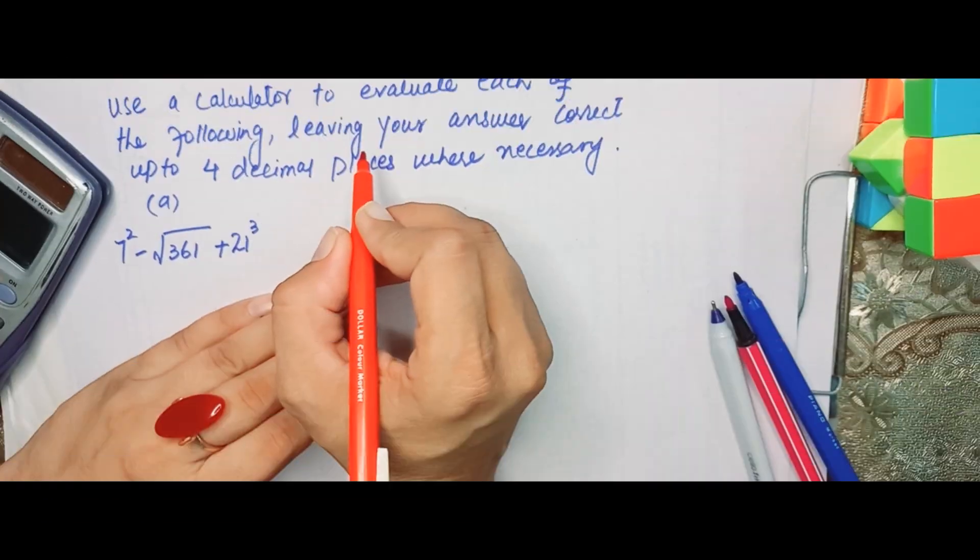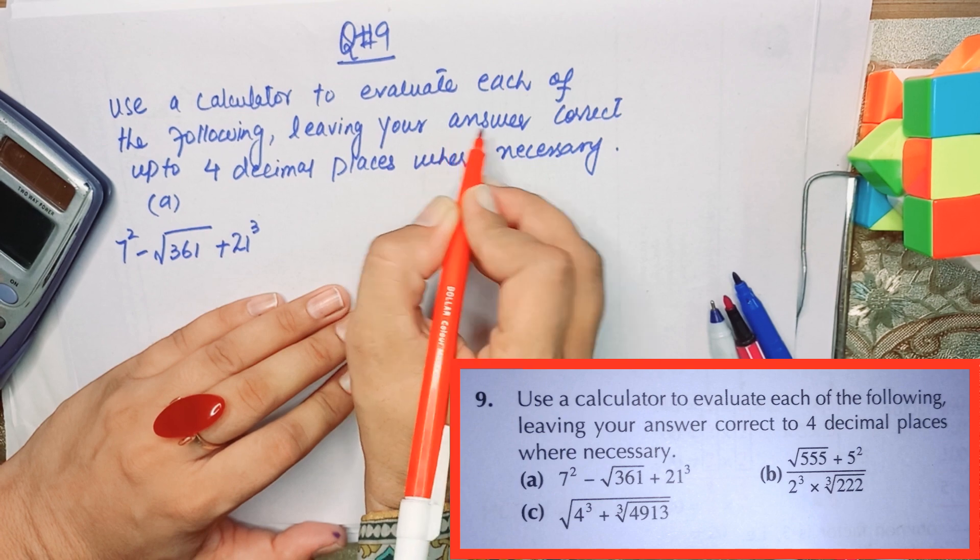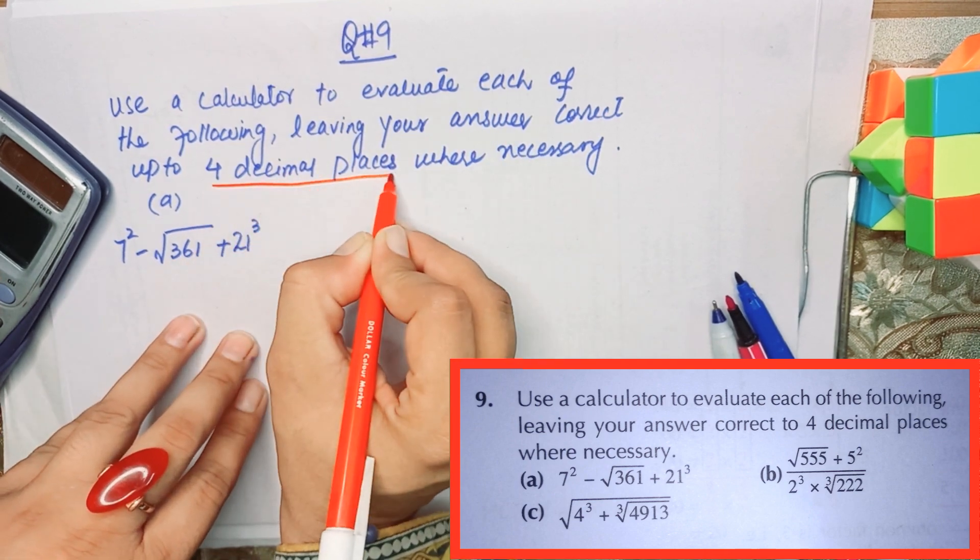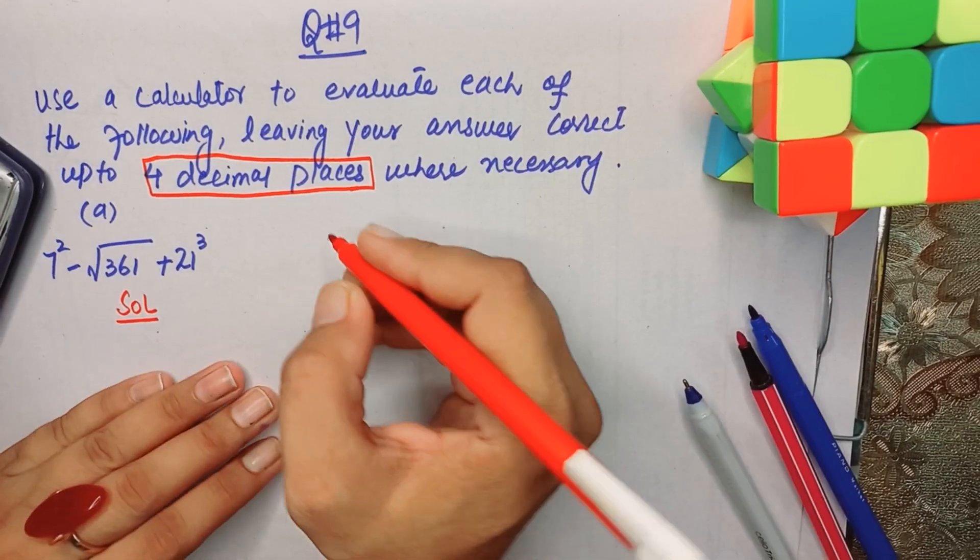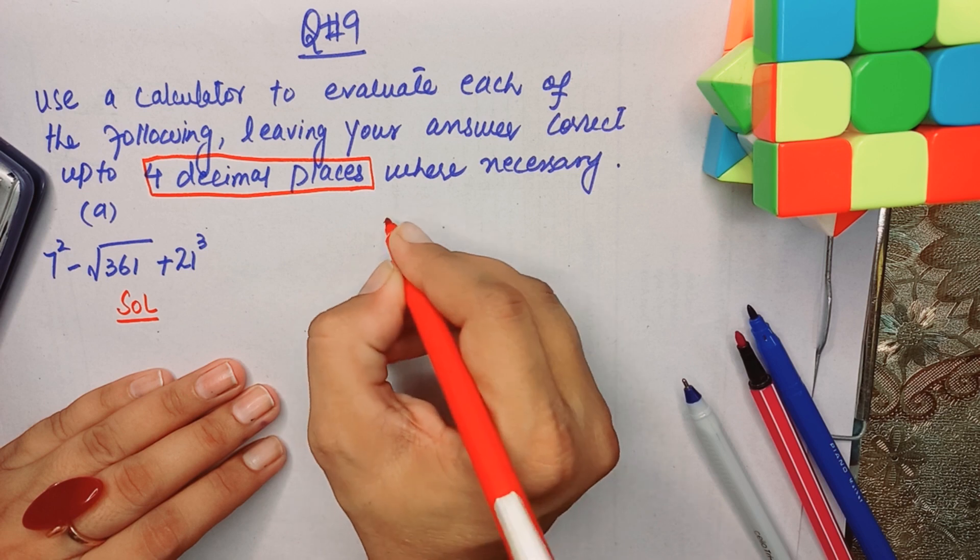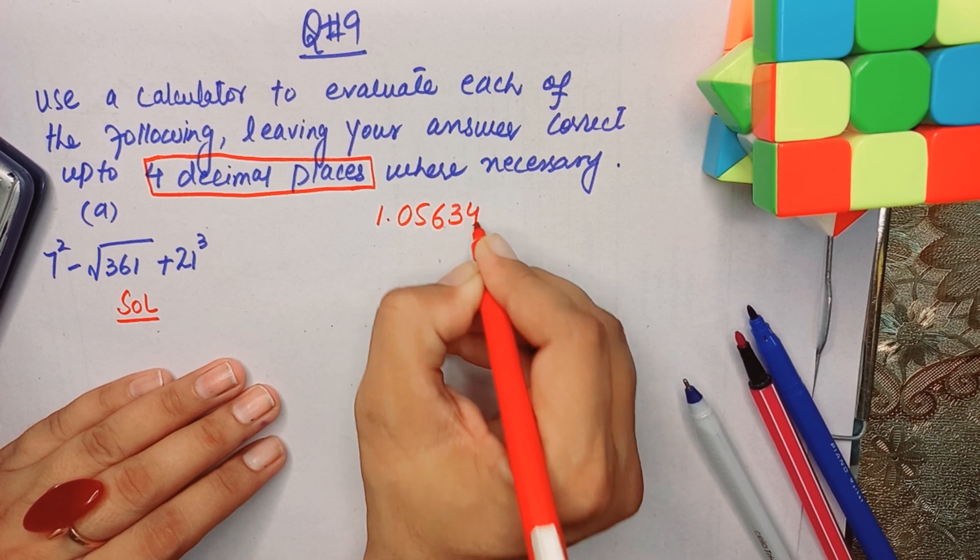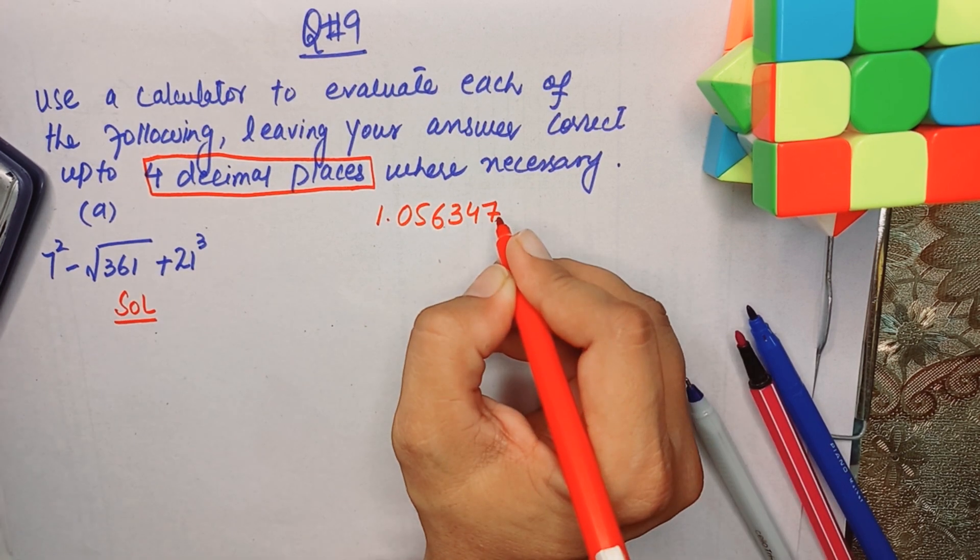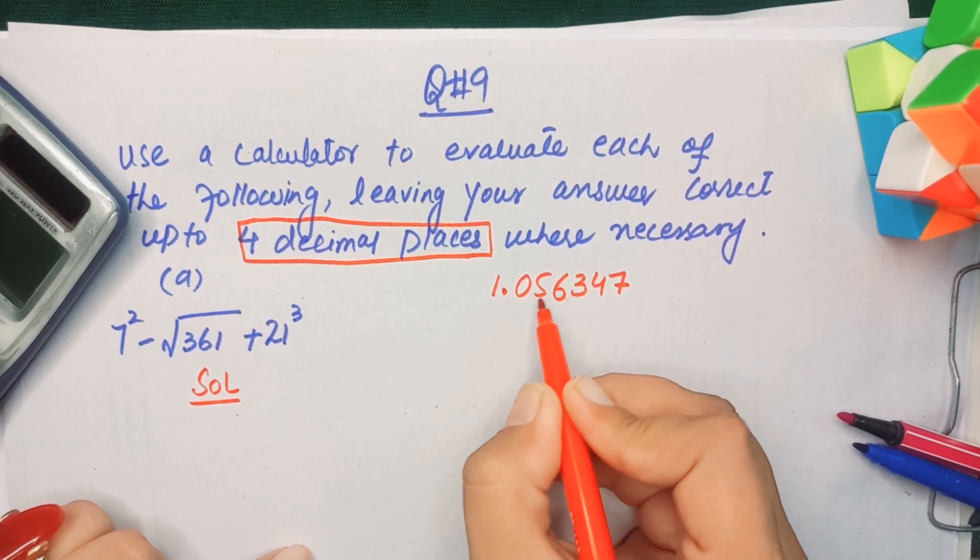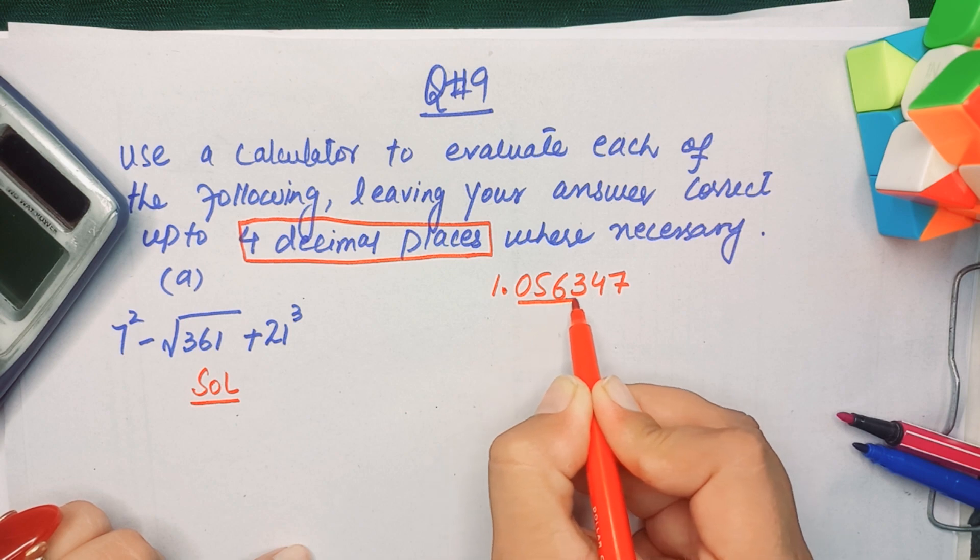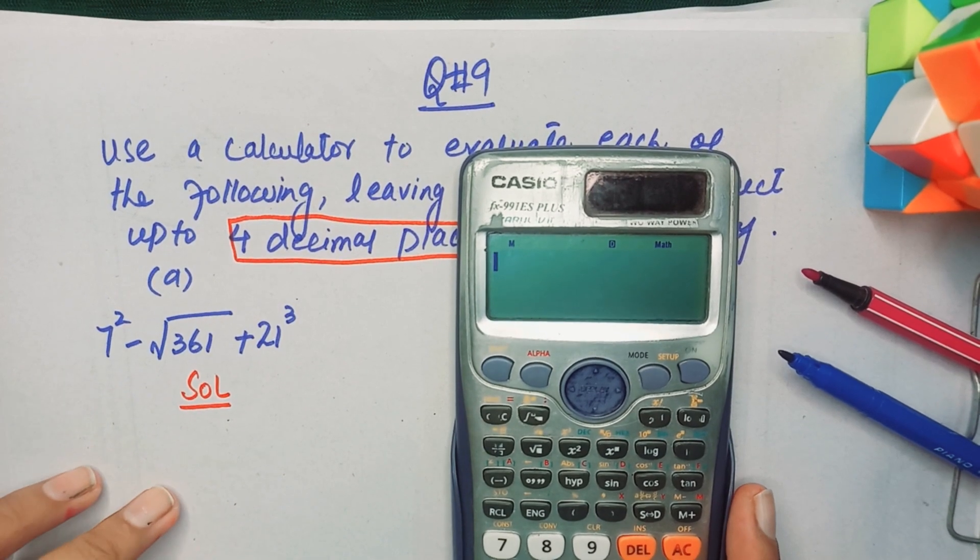Use a calculator to evaluate each of the following, leaving your answer correct up to four decimal places. This is the thing which you have to learn. Four decimal places means, like, if you have a decimal number like 1.056347, four decimal places means that you have to consider four digits after the decimal point.